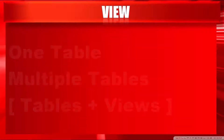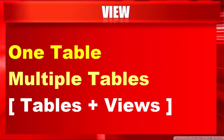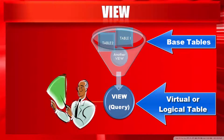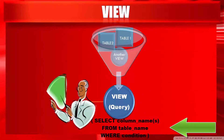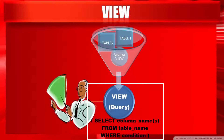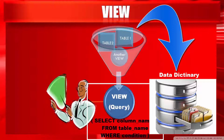A View is a database object. It can be created from one table, multiple tables, or a combination of multiple tables and Views. These tables are called base tables. A View is also called a virtual table or logical table. A View always displays the output from a query which is written during the creation of the View — it displays all the data from the base tables. A View only stores the definition of the View and the query associated with it; this information is stored in the data dictionary. That is the reason creating a View does not take much space in the database.